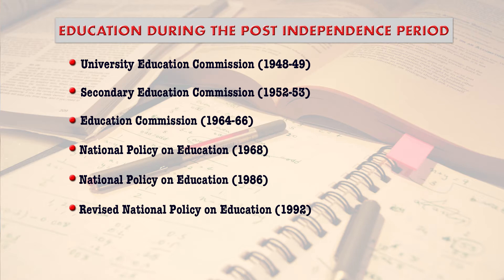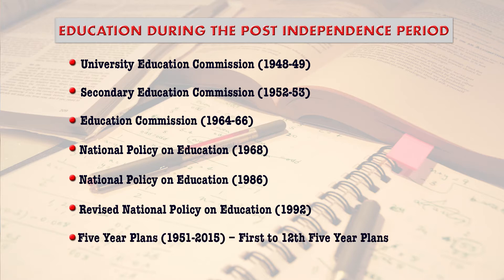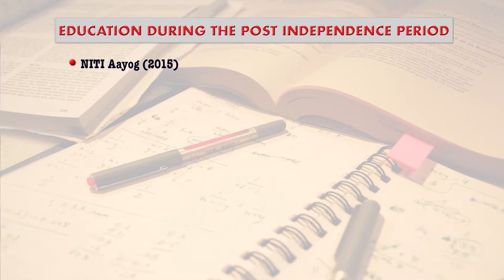Then further, the Revised National Policy on Education — this is not an independent commission but the revised version of the National Policy on Education 1986. Another development is the Five Year Plans, started in 1951 with the first five year plan, continuing every five years. They started from 1951 and continued till 2015 — a total of twelve five year plans that have been developed in this country, giving recommendations from 1951 to 2015.